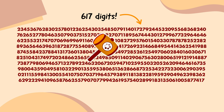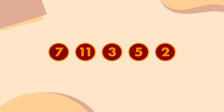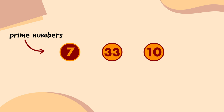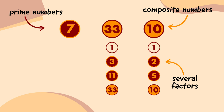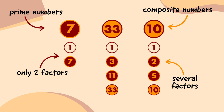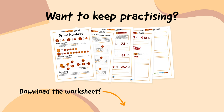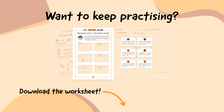So let's quickly remind ourselves one more time: prime numbers are the building blocks of maths and can be multiplied together to create composite numbers. Composite numbers have several factors — whole numbers that can divide exactly into them — but a prime number only has two factors: one and itself. If you want to keep practicing, download the worksheet in the video description, which includes that handy list of dividing tricks so you can become a prime number detective.